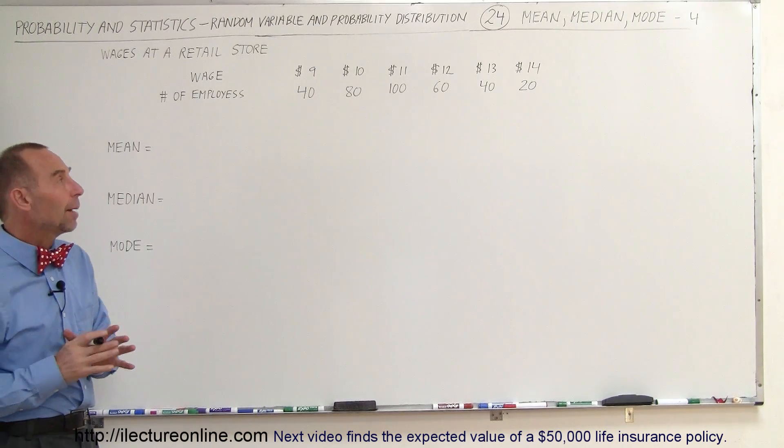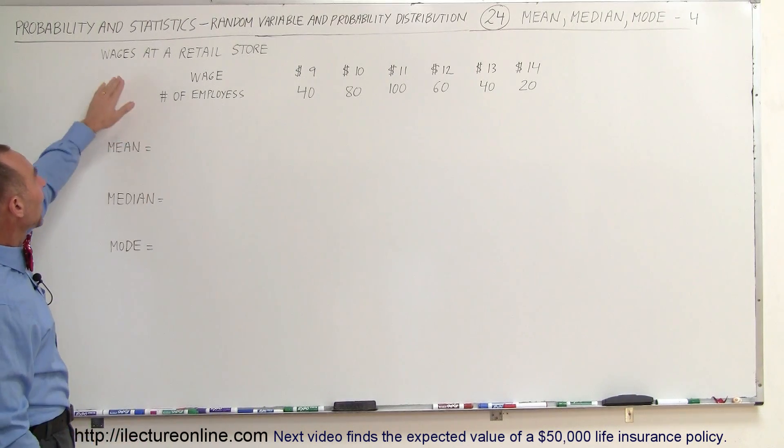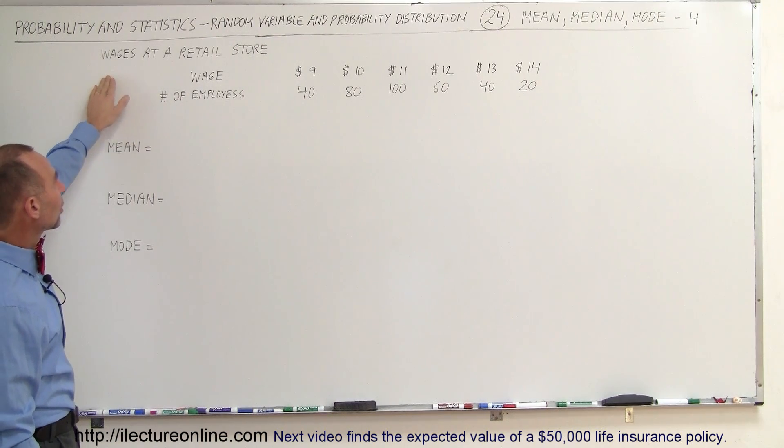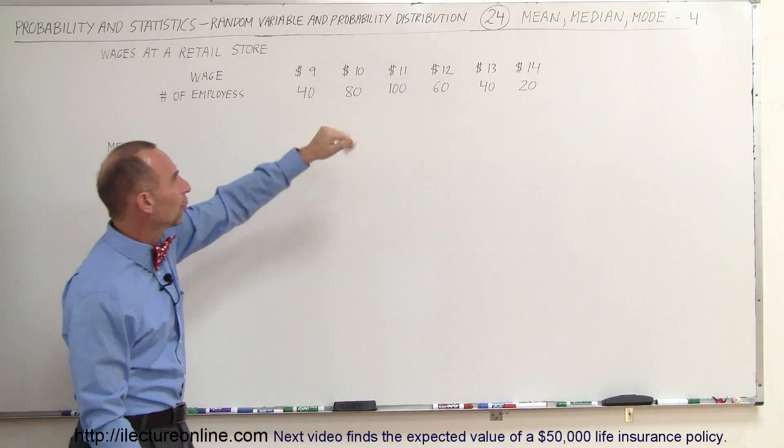Here's a little different example. What we have here is, let's say, a retail store, maybe a chain of retail stores, that offers wages anywhere from $9 to $14.